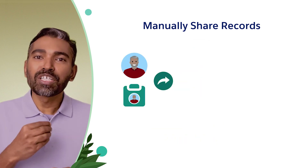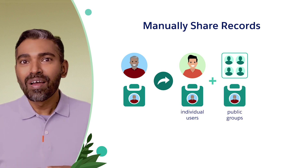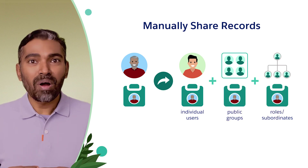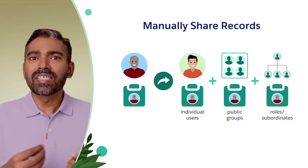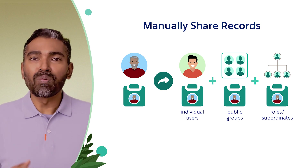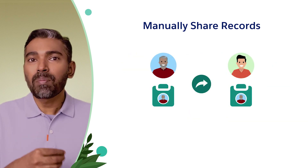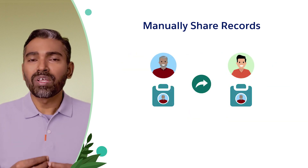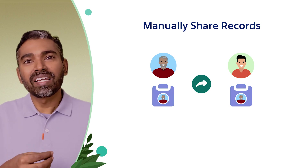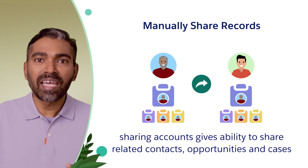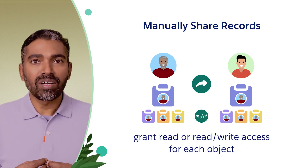When you manually share a record, you can share it to individual users, users in a public group, or to roles and roles and subordinates. With this flexible sharing, you can easily grant one-off access to more than one user at a time. When sharing an account record, you can additionally share its related records such as contacts, opportunities, and cases, and decide whether they get read access or write access for those records as well.